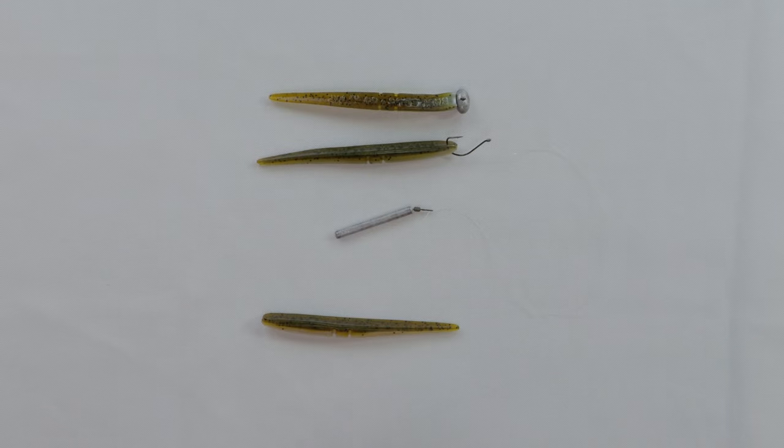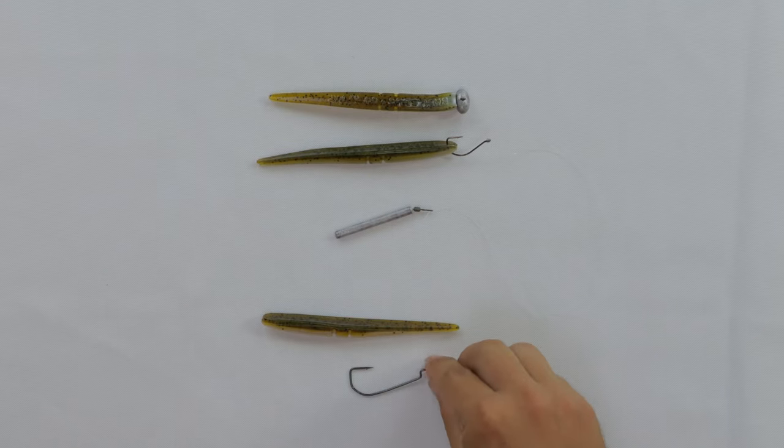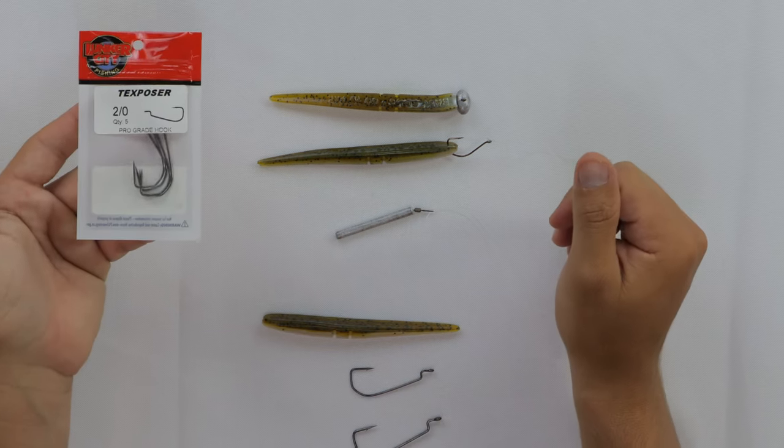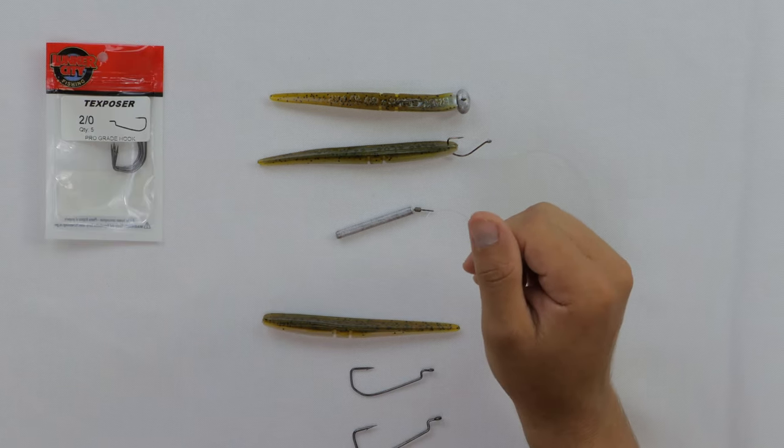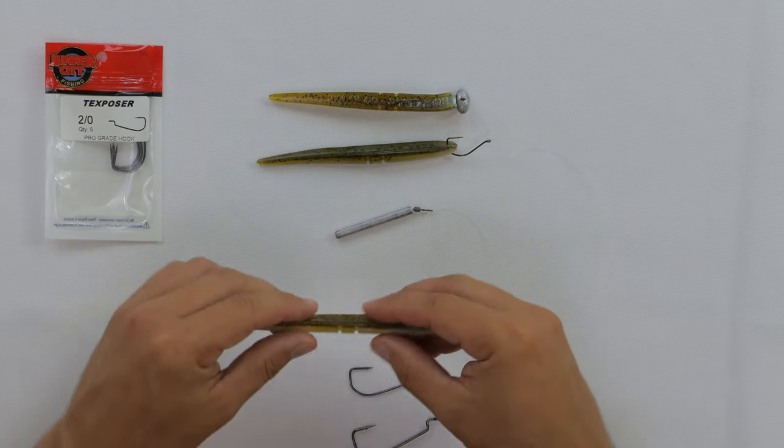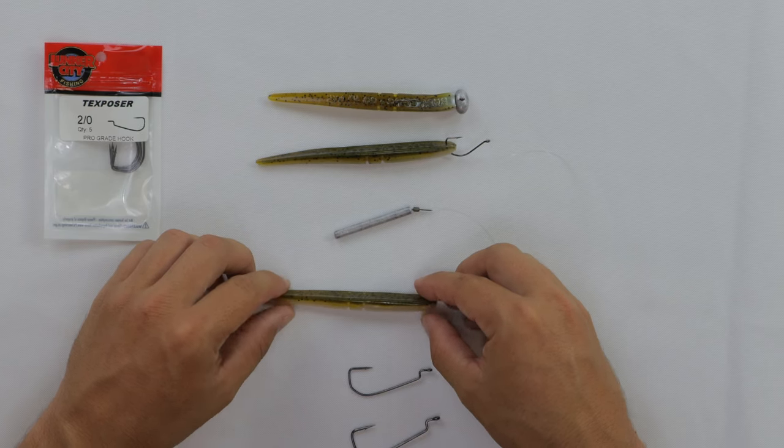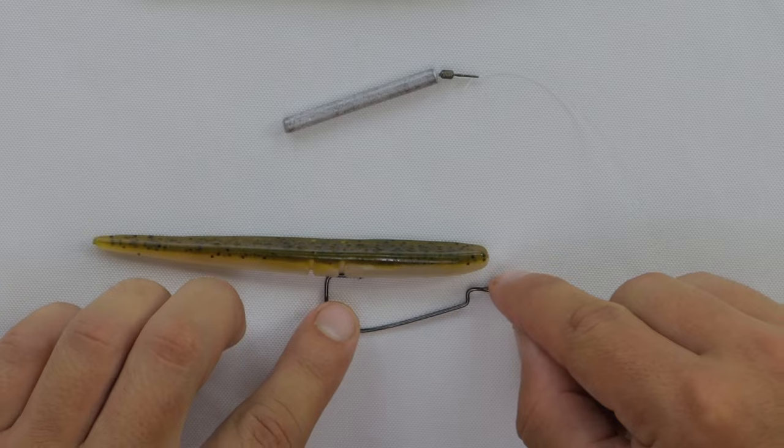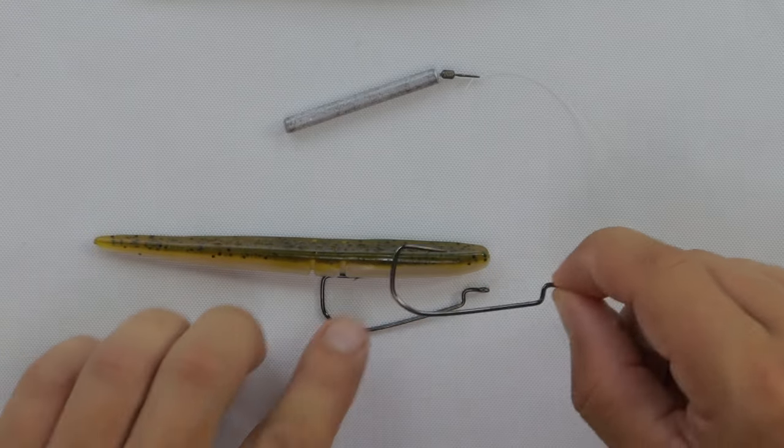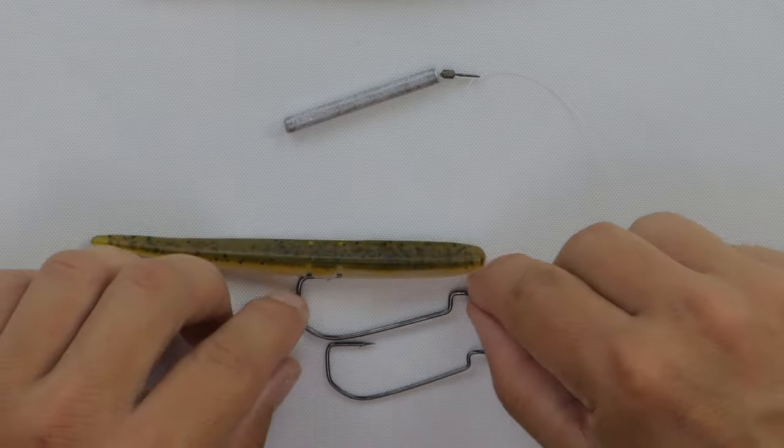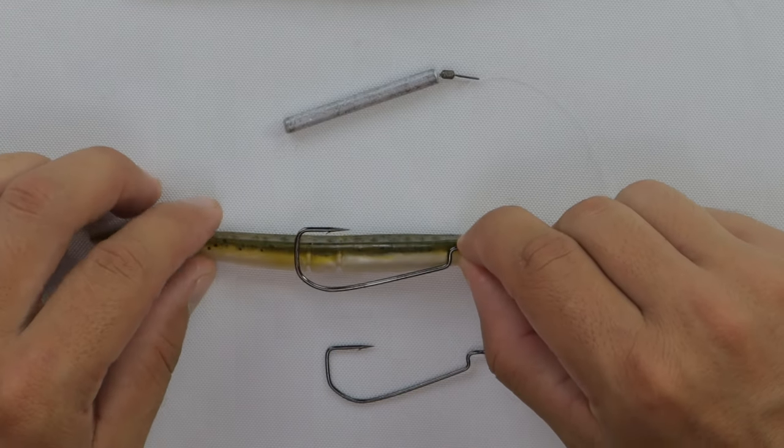Option number three is to rig it weightless. So you have the option of actually using a 2-0 Texposer, or if you wanted to, you can also use the 3-0. So I'll show you both, and if I line up the bait right here, you have the 2-0 size, which I think fits pretty nicely. The 3-0 size is a bit bigger, and it's going to sit a little bit further down the bait.